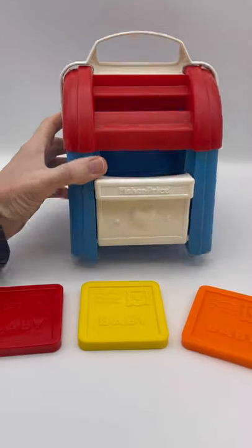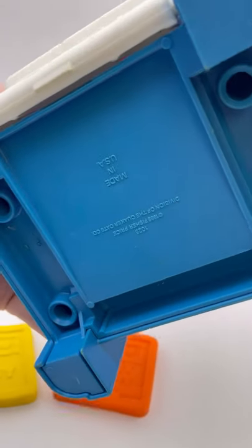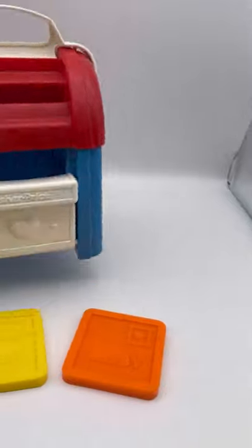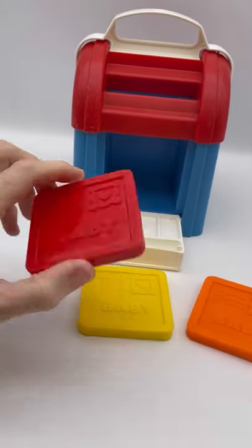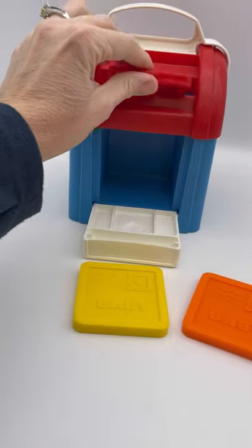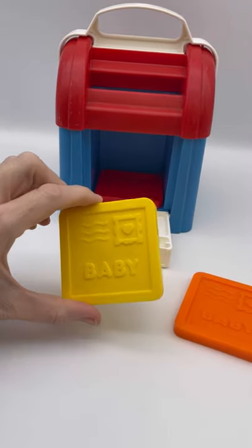This is a Fisher Price mailbox dated 1989, division of the Quaker Oats. It says 1025, so I don't know if that's an item number. It is made in the USA.